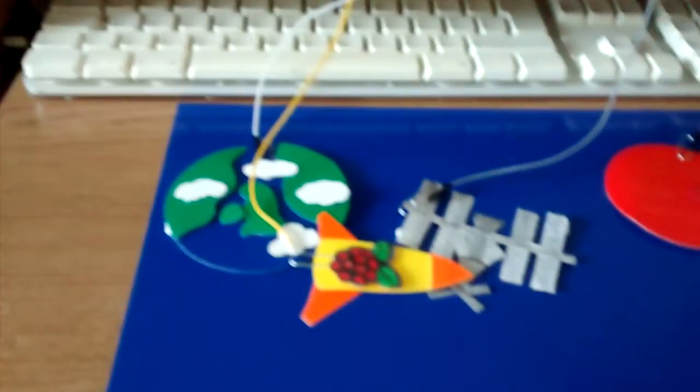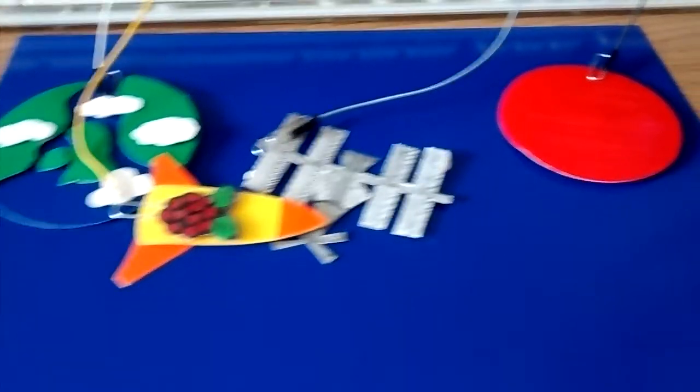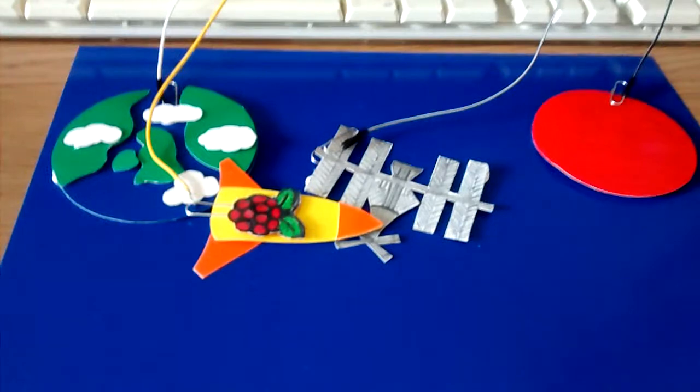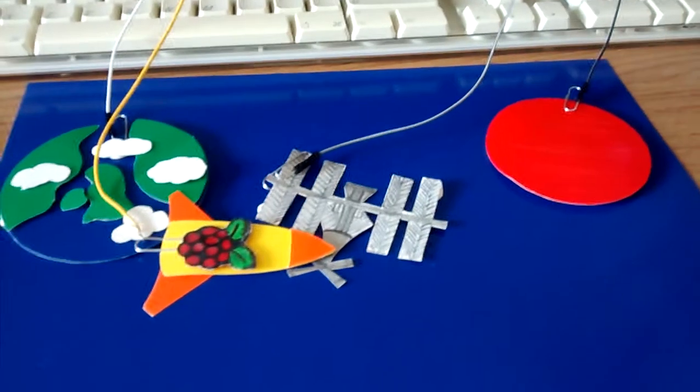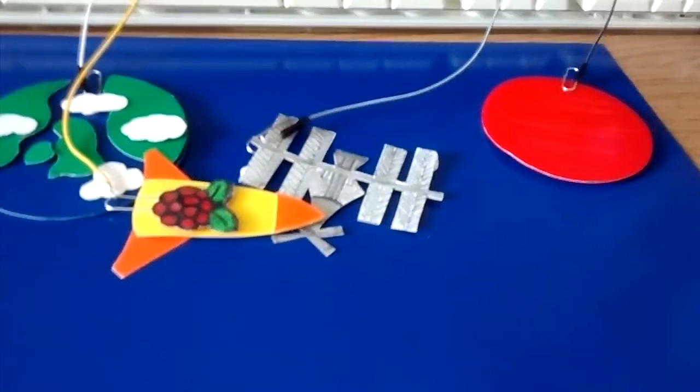So there we have it. A user interface built using a Raspberry Pi 2, a load of Blue Peter materials, a bit of Python code, and a lot of tearing my hair out. And all this is going to go in a future Linux Voice magazine. Thanks for watching, it's been a long video. Take care. I'll see you later.